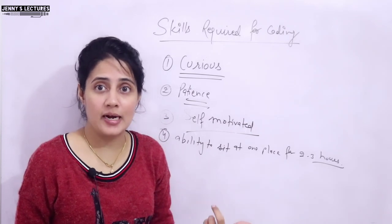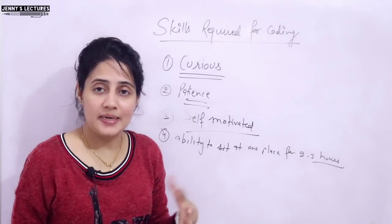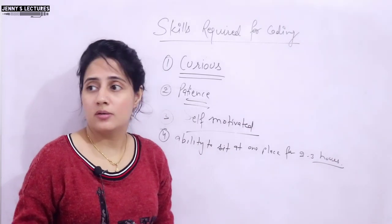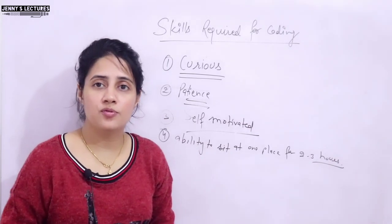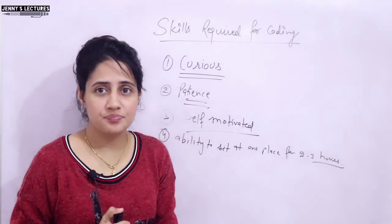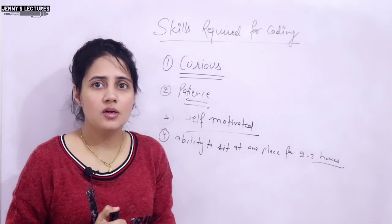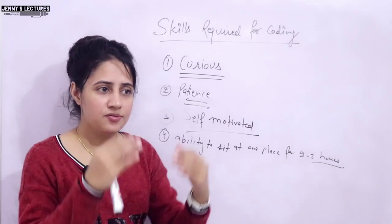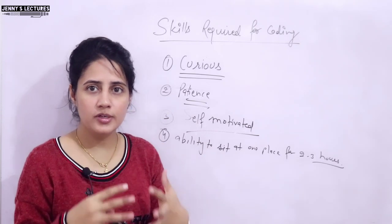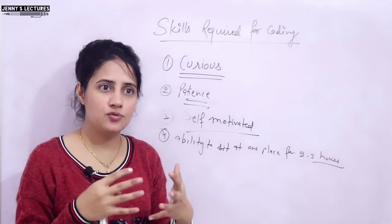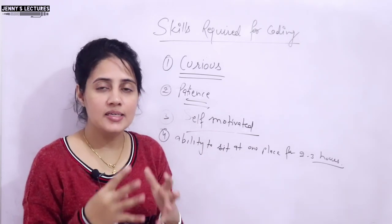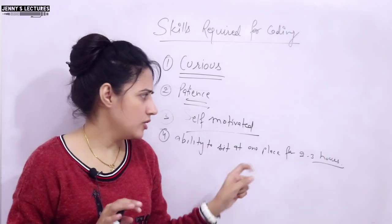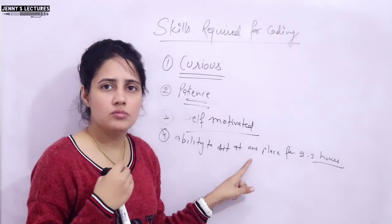In the beginning, some students are not able to sit in front of a computer for even half an hour. You have to build this habit — being able to sit for at least one and a half to two or three hours and write some code. This ability to focus and sit at one place is also a required skill.